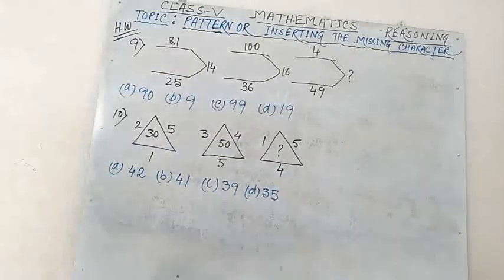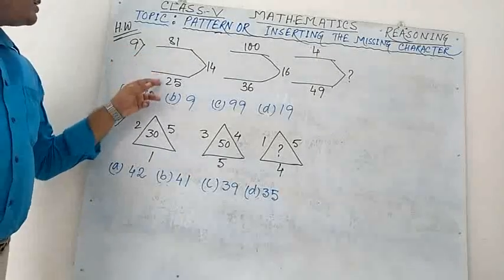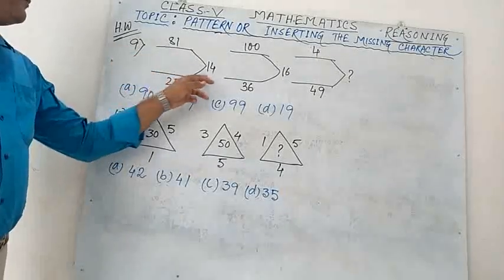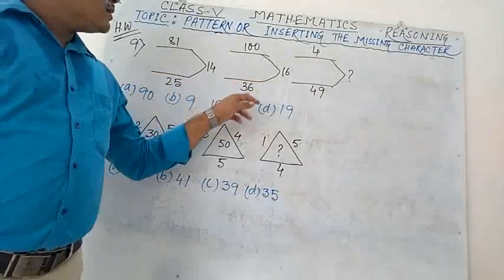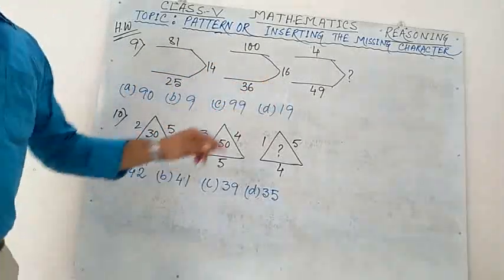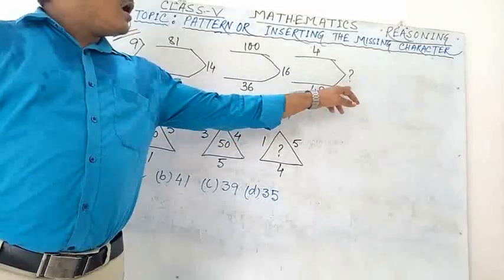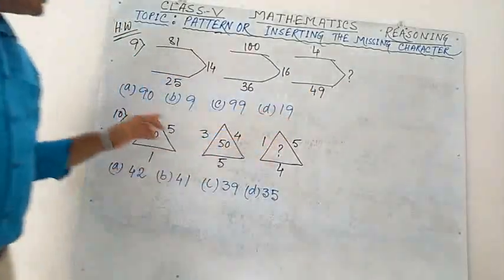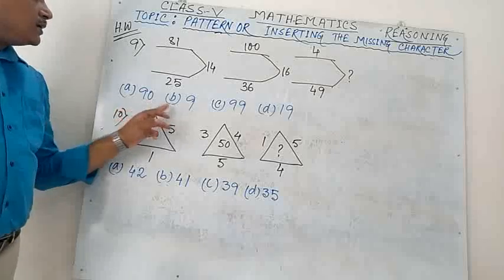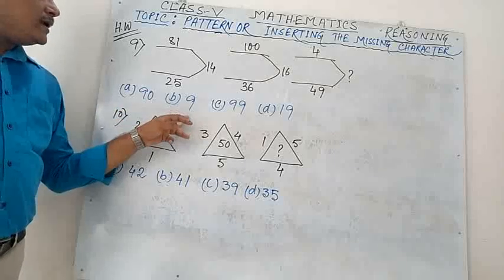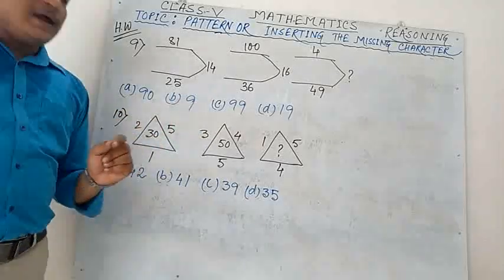Number 9: 81, 25 → 40; 100, 36 → 16; 4, 49 → question mark. Options: A) 90, B) 9, C) 99, D) 90.